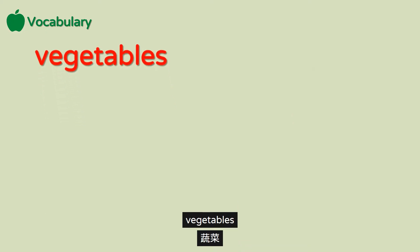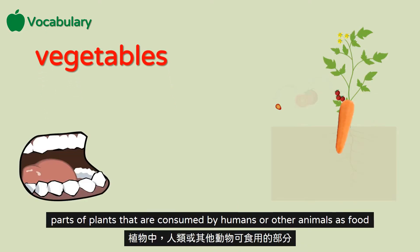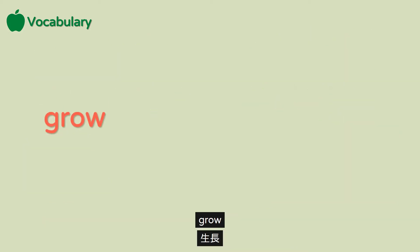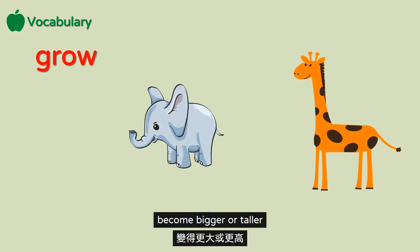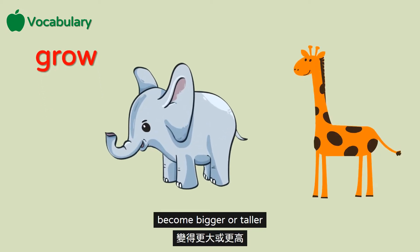Vegetables: parts of plants that are consumed by humans or other animals as food. Grow: become bigger or taller.